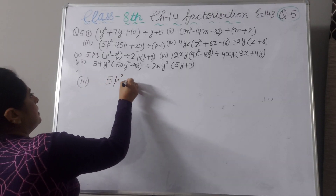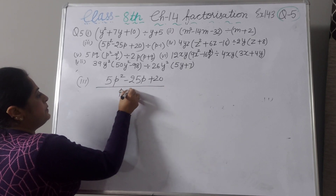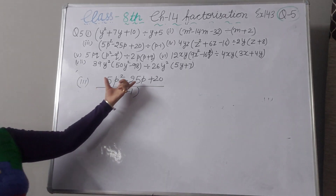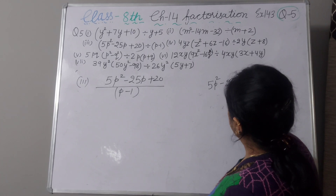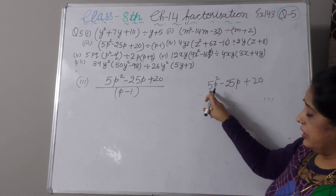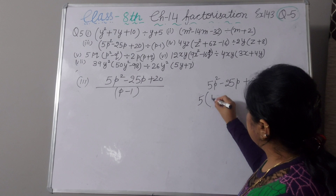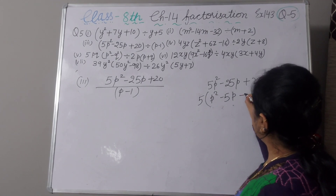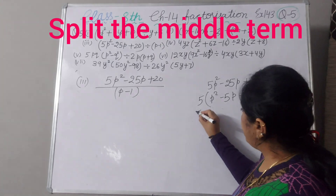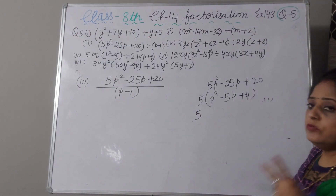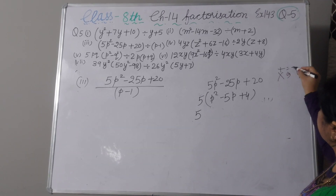Now next part: 5p squared minus 25p plus 20, and you have to divide by p minus 1. First we solve the numerator: 5p squared minus 25p plus 20. In all three terms, 5 is common — take 5 as common to get 5(p squared minus 5p plus 4). Since it is not a perfect square, we will split the middle term. Think of two numbers: when we multiply we get 4, and when we add we get minus 5.